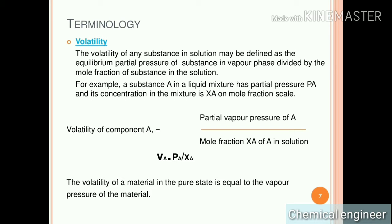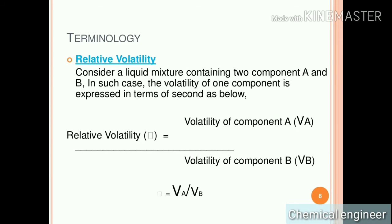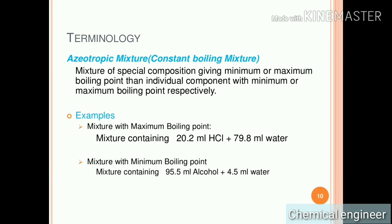3. Volatility — volatility is defined as the ratio of partial vapor pressure to the mole fraction of that component in a mixture. At equilibrium, the volatility of a pure substance is the same as its vapor pressure. 4. Vapor pressure — it is the pressure exerted by a vapor in a closed system. The vapor pressure of component A in a binary mixture is given as PAV.